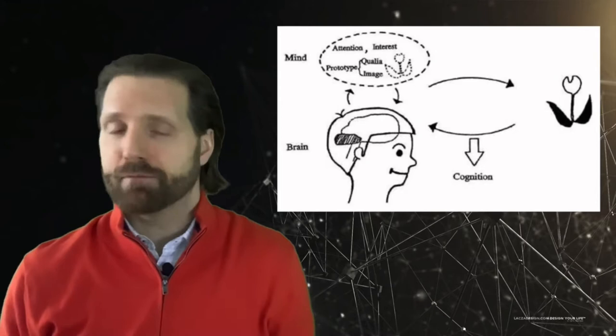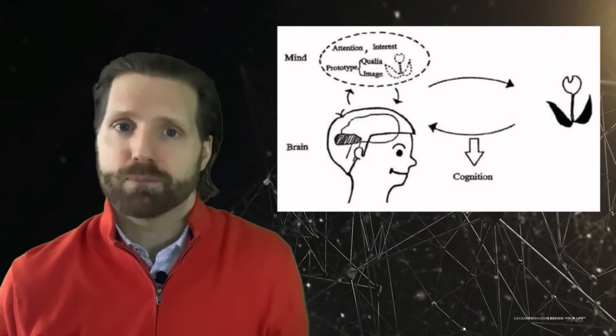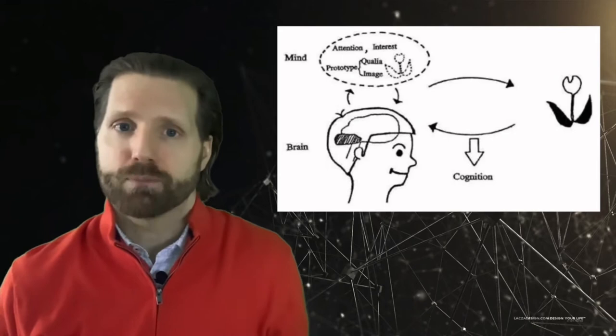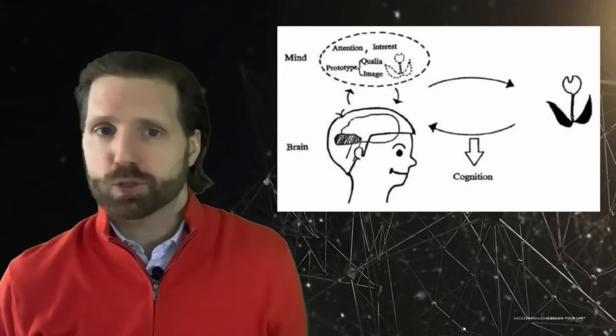We often use the two interchangeably. We may say I've got a lot on my mind, or after a tough exam, we may say that my brain hurts. When an area of the brain is damaged, whether from injury or disease, we can observe changes in how the mind works.